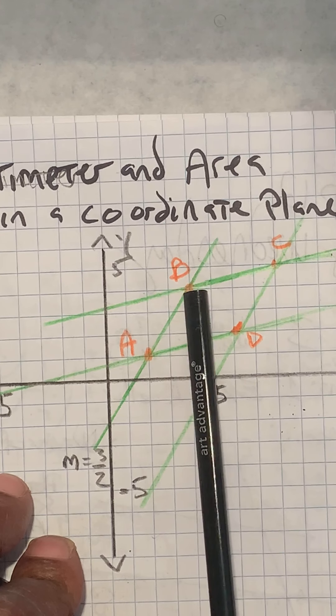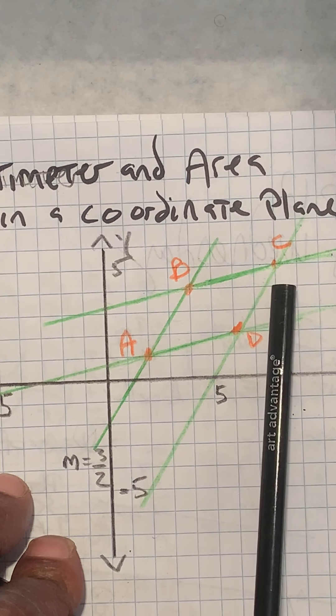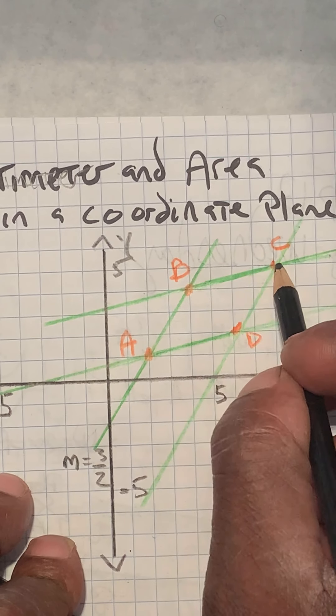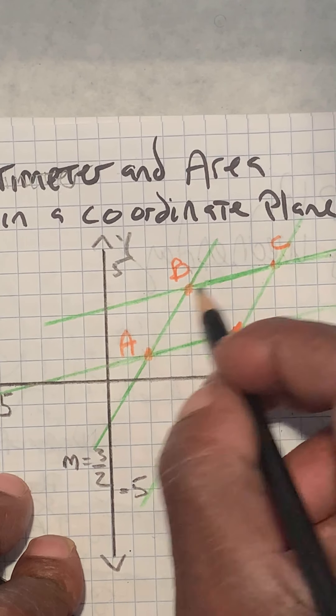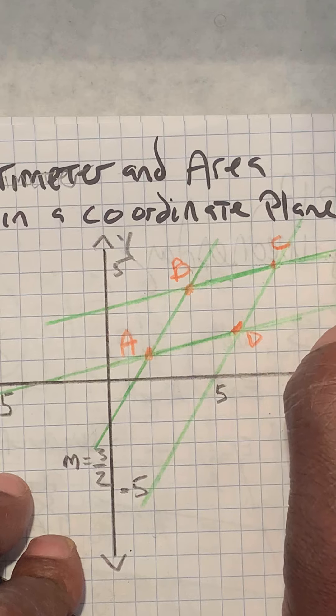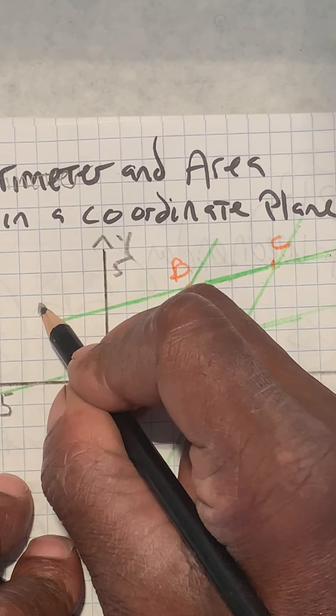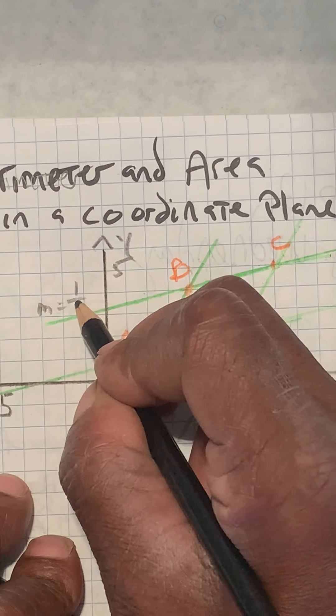Similarly, if I do the same for BC, I'm going to go one, two, three, four, and one up. One up and four to the right. So BC has a slope of M equals one over four.